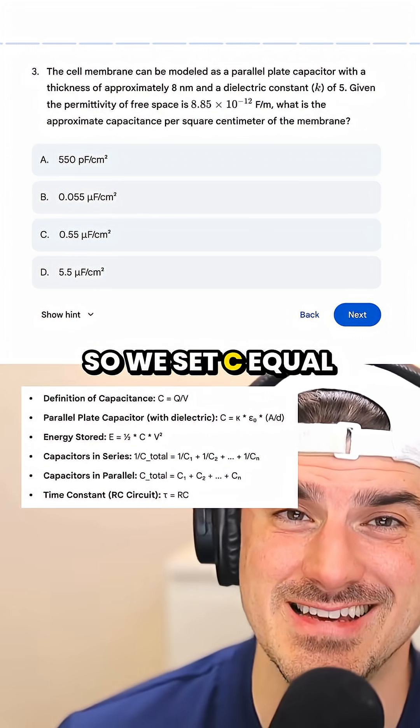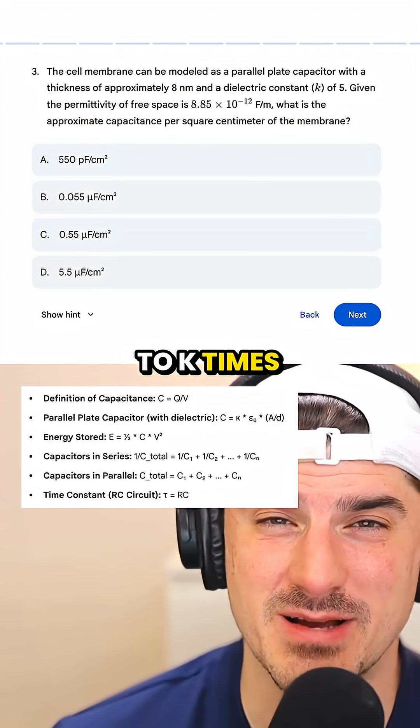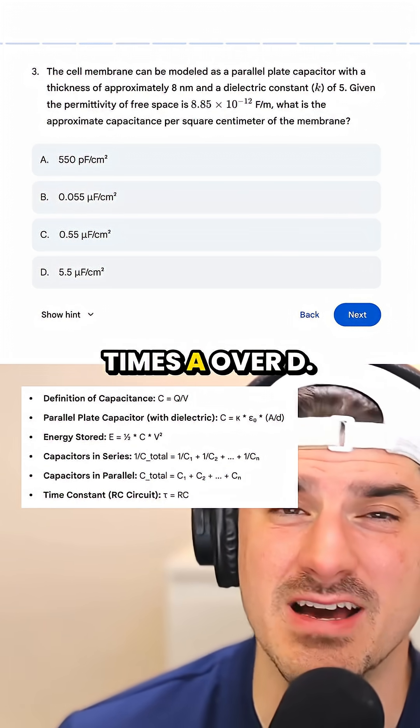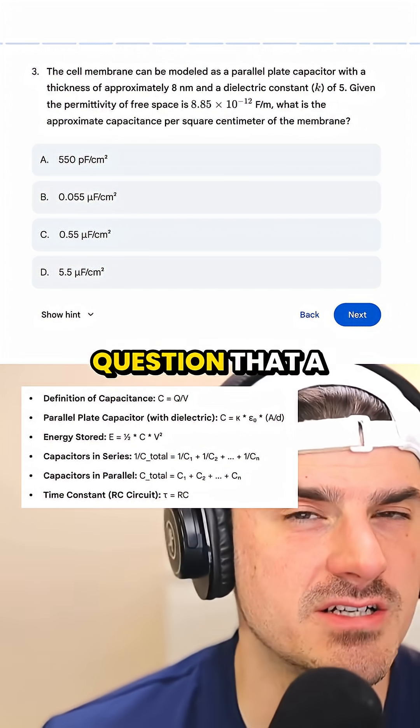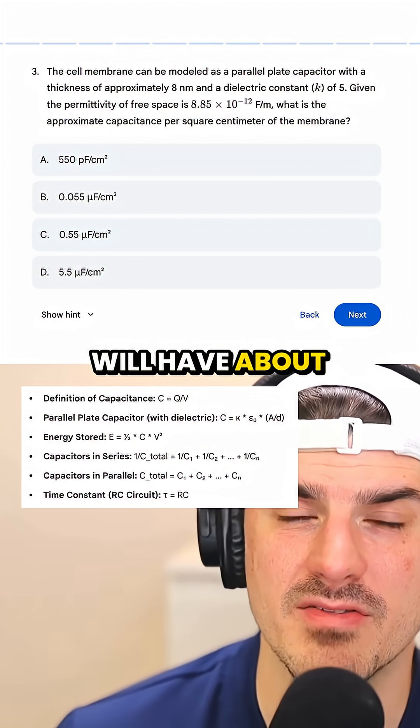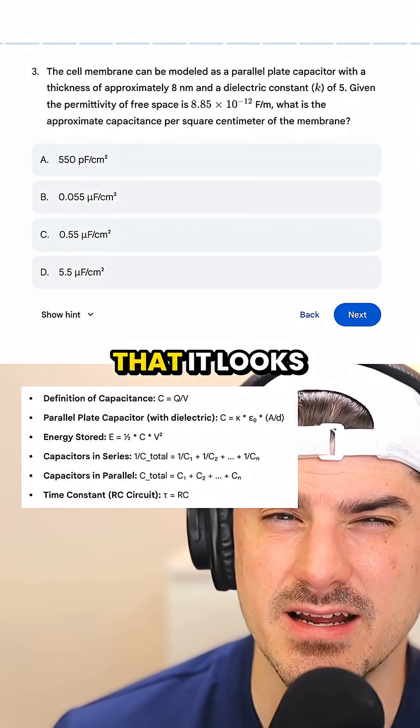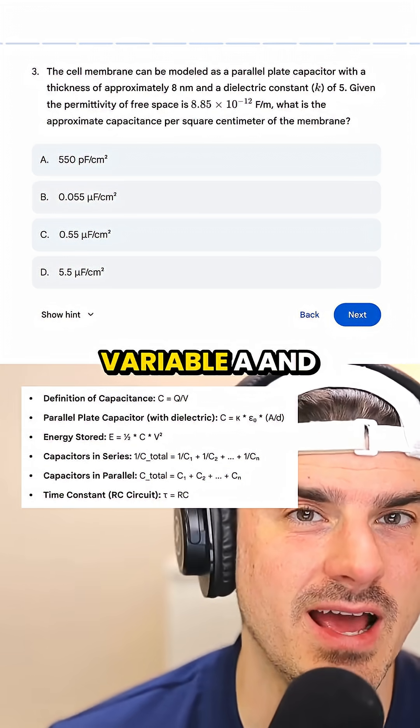So we set C equal to k times epsilon naught times A over D. The other question that a lot of students will have about this particular expression is that it looks like it needs the variable A.